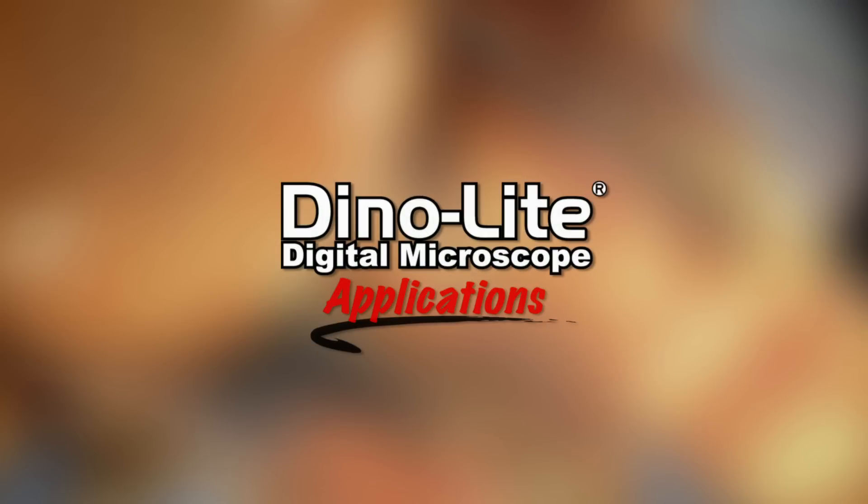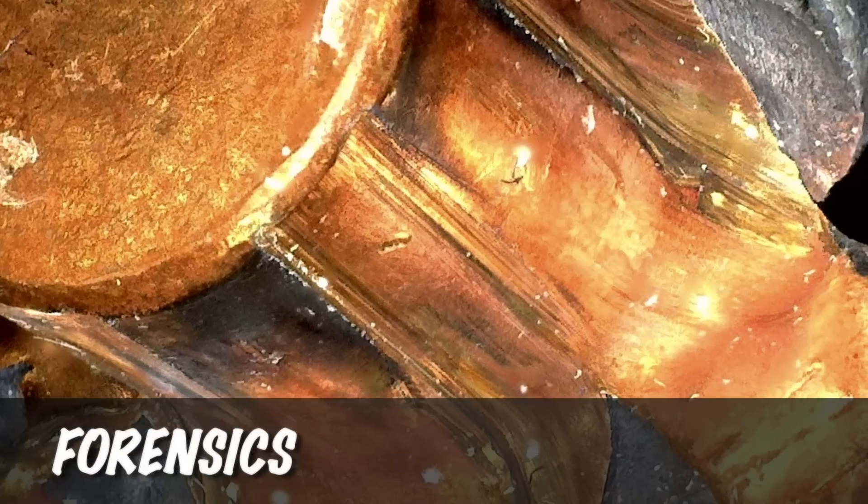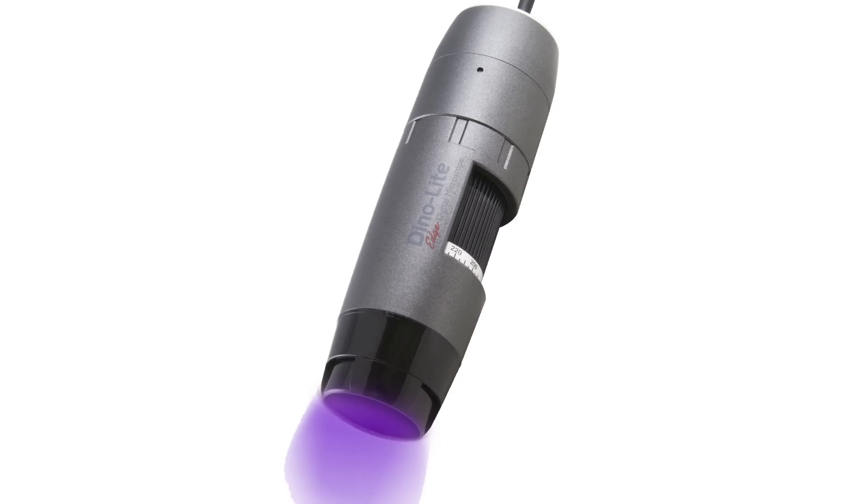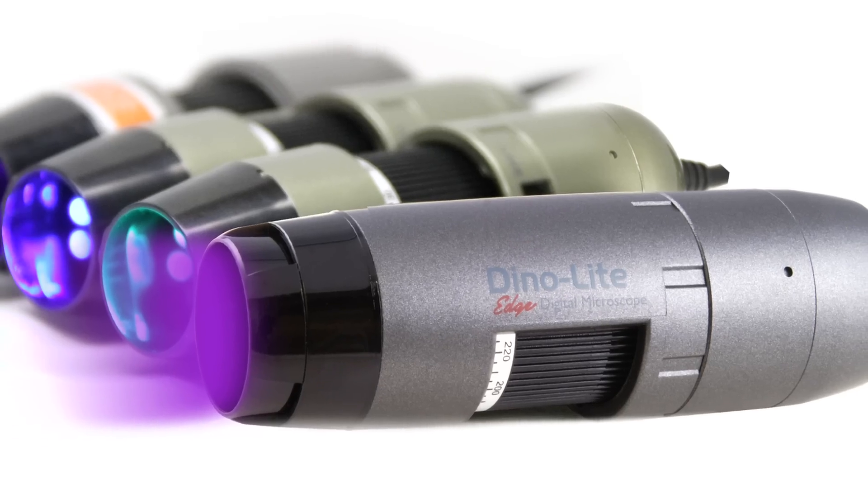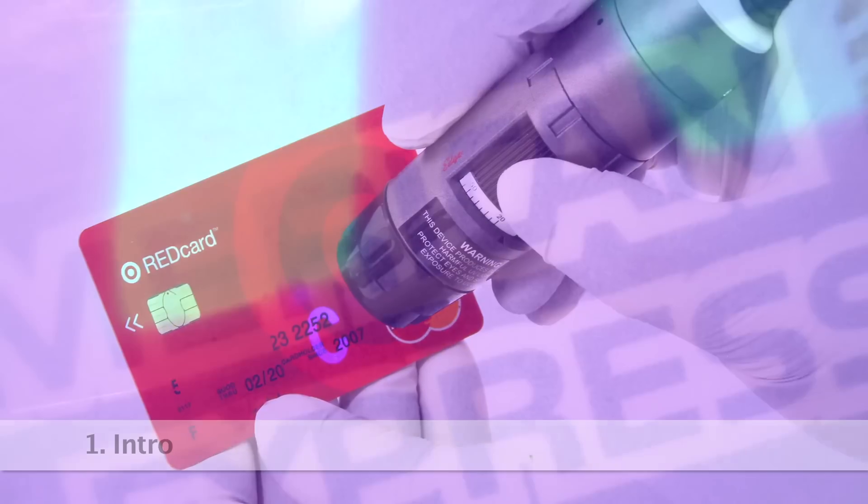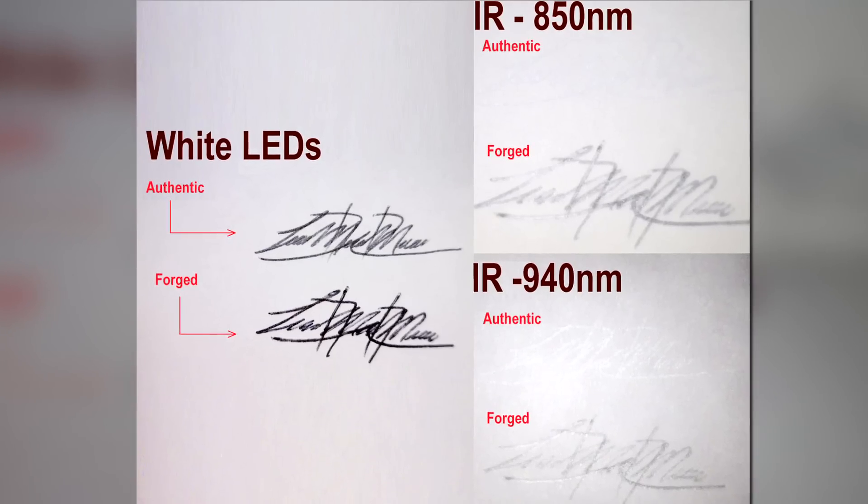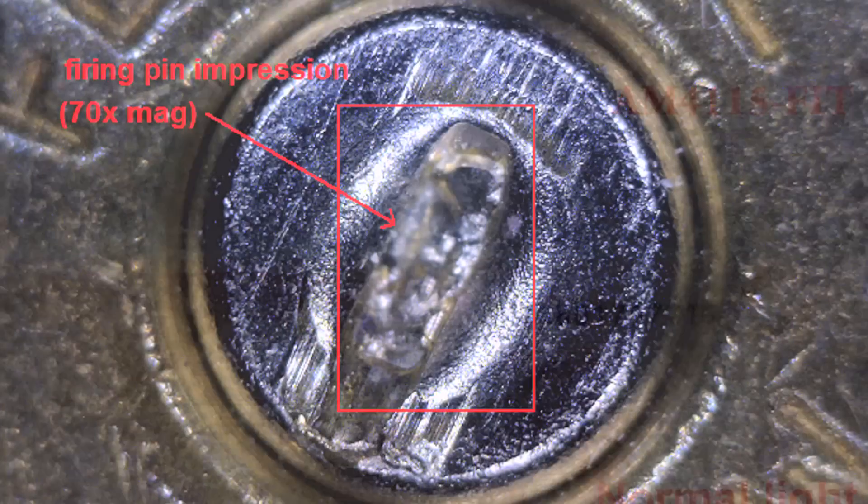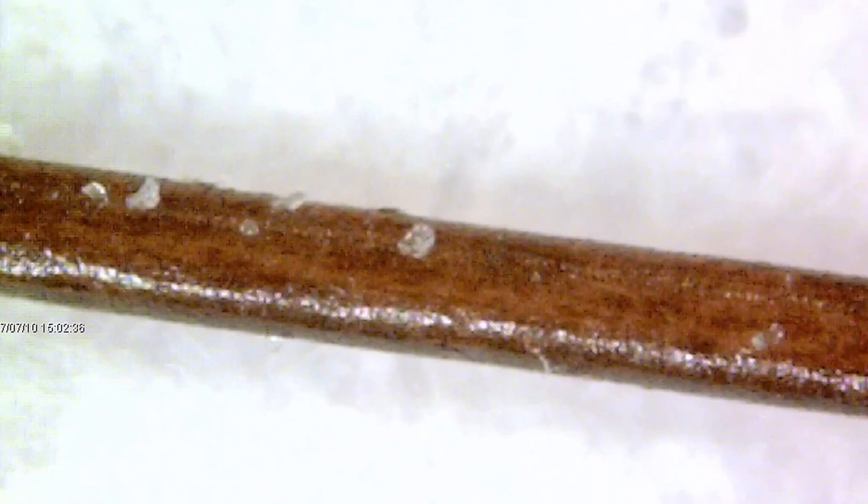This is a Dynolite Digital Microscope Applications video focusing on forensics. The Dynolite is a handheld microscope camera that connects to a computer via USB, with most standard models going up to 220 times magnification. All of the sample images shown were captured by Dynolite microscopes.